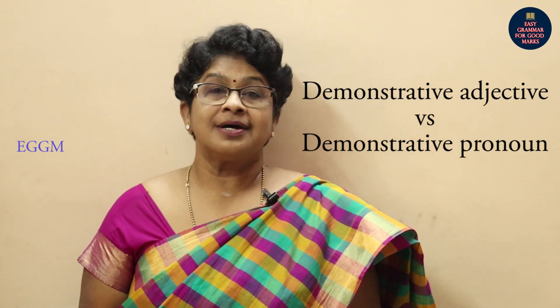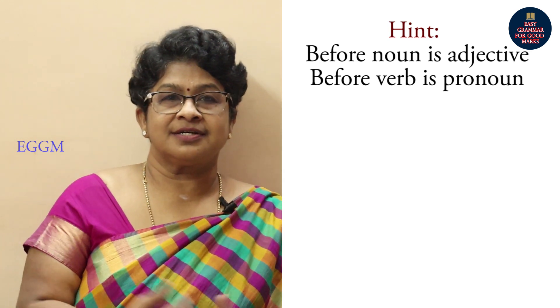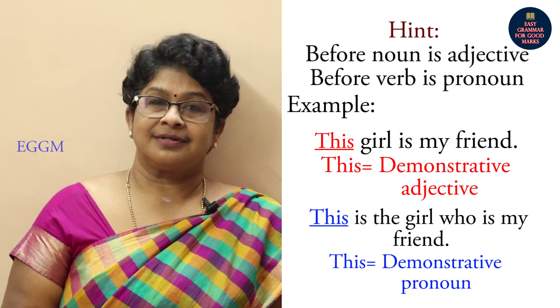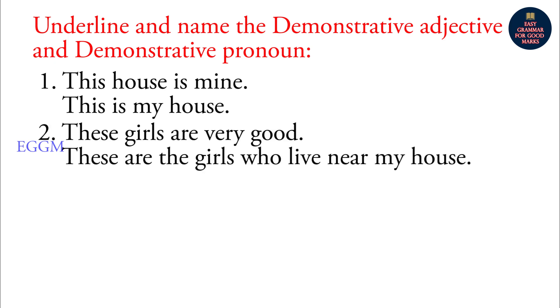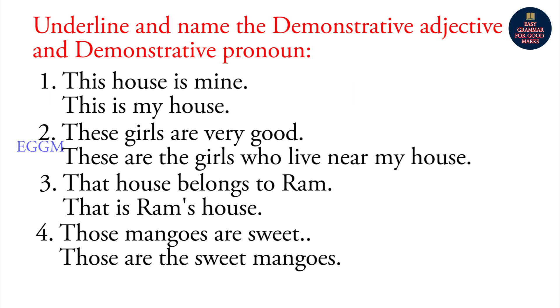Next, the difference between demonstrative adjective and demonstrative pronoun. The formula is the same: noun before the adjective, verb before the pronoun. Examples: 'This girl is my friend' versus 'This is the girl who is my friend.' 'This house is mine' versus 'This is my house.' 'These girls are very good' versus 'These are the girls who live near my house.' 'That house belongs to Ram' versus 'That is Ram's house.' 'Those mangoes are sweet' versus 'Those are the sweet mangoes.'